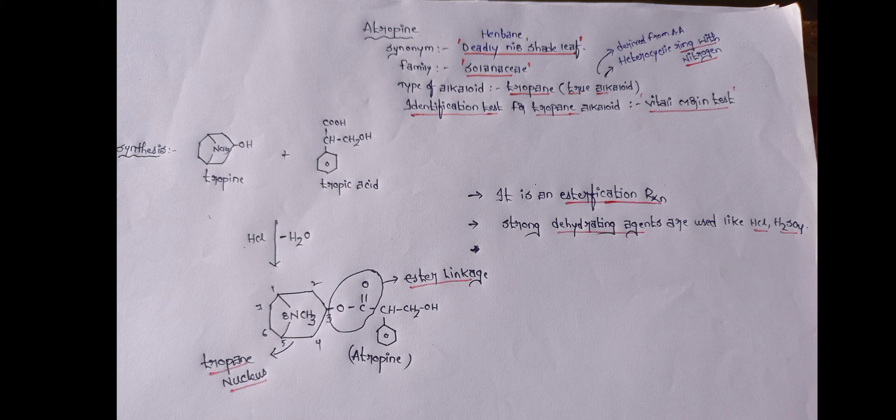Side effects of anticholinergic drugs are: blurred vision, constipation, dryness of mouth, dryness of eyes. All these are the side effects of anticholinergic drugs.